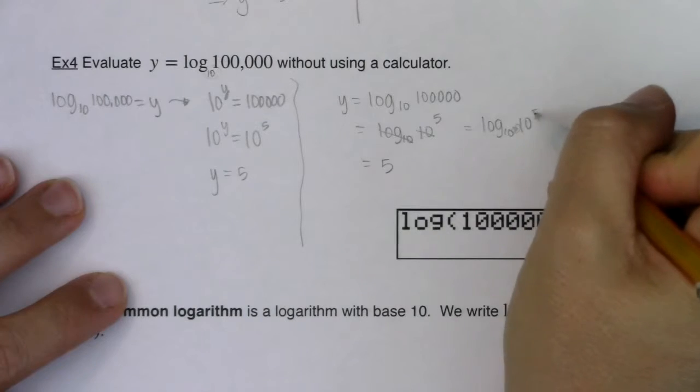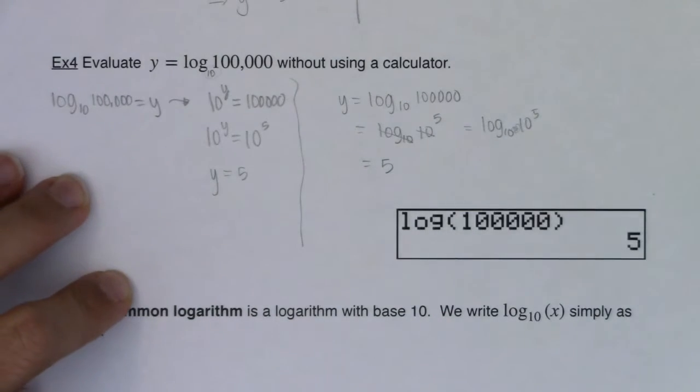Well, you need a five because 10 to the fifth is equal to 10 to the fifth. That's why this exponent is five.